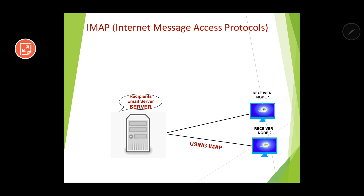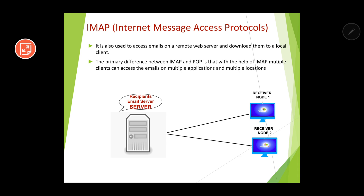The work of POP and IMAP is the same except: if you are accessing emails on only a single machine, POP is recommended; for multiple machines, IMAP is recommended. IMAP allows multiple clients to access emails on multiple applications and locations — for example, on both a computer and a mobile app simultaneously. It works on two ports: port 143 for non-encrypted communication and port 993 for encrypted communication.